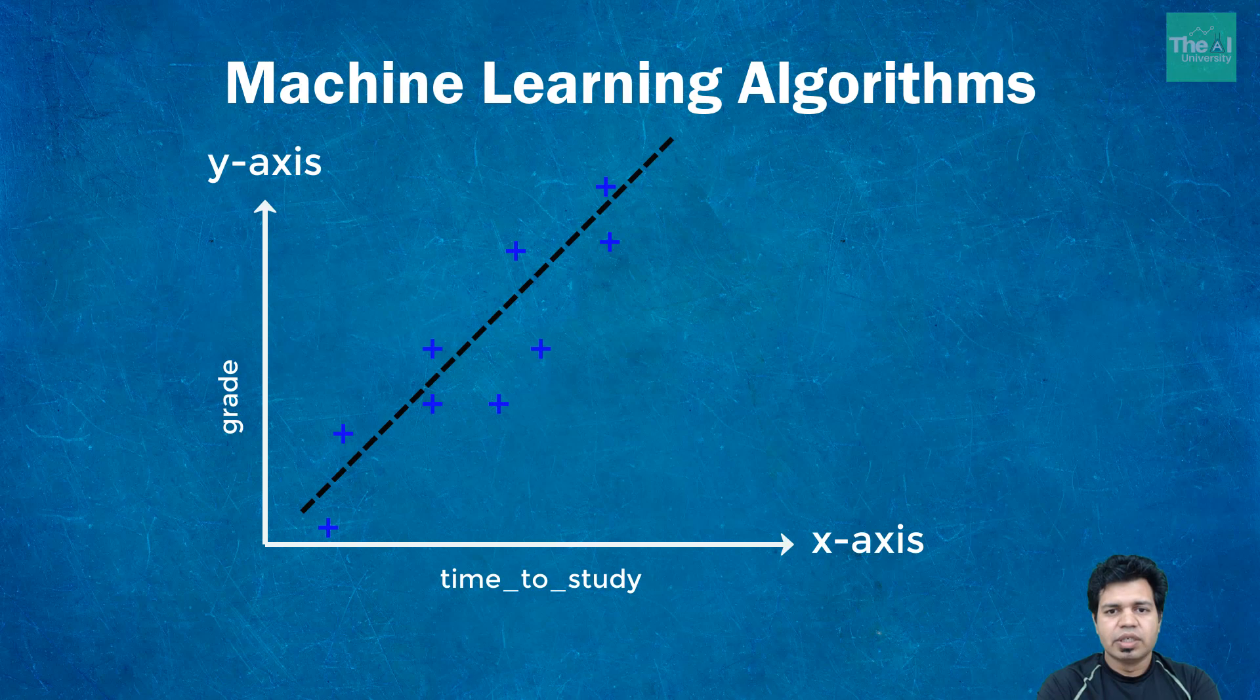So the blue plus sign depicts a student who let's say studied for five hours and got a grade of 3.9. So the best fit black line actually depicts where that student actually be lying according to our simple linear regression model. And if you see according to our model it should be lying somewhere on the trend line and shown here as orange plus sign. So the grade should actually be 3.5.